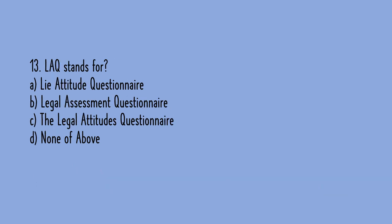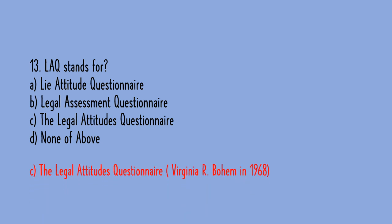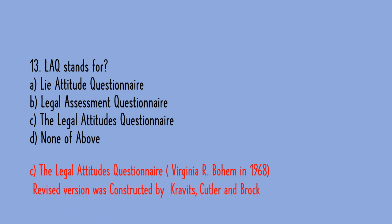MCQ 12: The correct answer for PCL-R is B, Hare Psychopathy Checklist Revised. It contains 20 items and assesses pathological lying, manipulativeness, and willingness to violate social norms. MCQ 13: LAQ stands for — option A: Lie Attitude Questionnaire, option B: Legal Assessment Questionnaire, option C: The Legal Attitudes Questionnaire, option D: none of the above. The correct answer is C, The Legal Attitudes Questionnaire, constructed by Virginia R. Boehm in 1968; the revised version was constructed by Kravitz, Cutler, and Brock. It contains 30 items and assesses authoritarianism and equalitarianism.